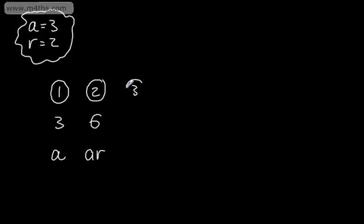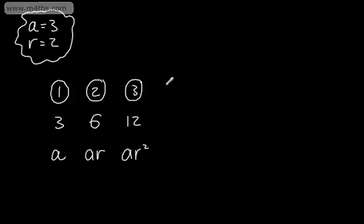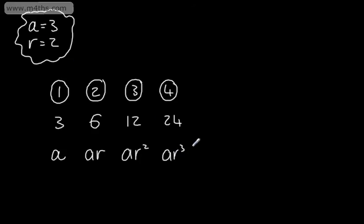If we look at the third term, when n is 3, we would multiply by 2 again, and that would give me 12. My expression would be a multiplied by r, multiplied by r again, which would be ar squared. If we look at the fourth term, we would multiply by 2 again, that would be 24, and we'd multiply by the common ratio again, so our expression for the fourth term would be ar cubed.